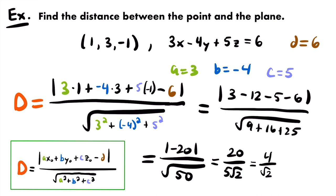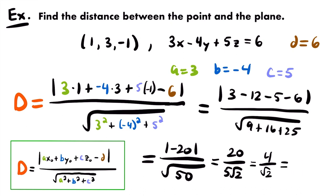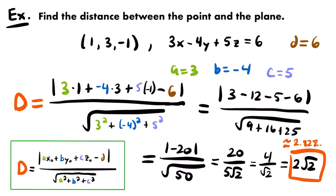You don't have to rationalize your answer, but this one simplifies nicely. Multiplying by √2/√2, we get 4√2 / 2, and 4 divided by 2 is 2. So the distance is 2√2. That is the distance between this point and this plane. The approximate value is about 2.828. And that's it for this example.